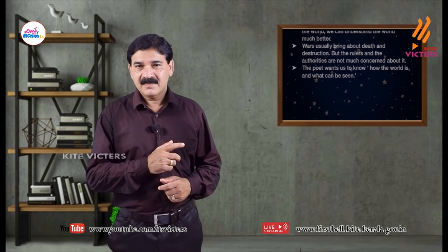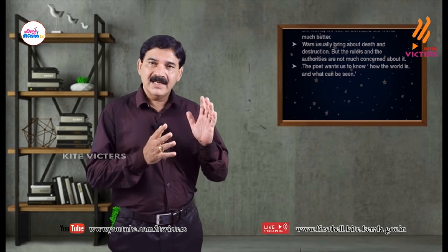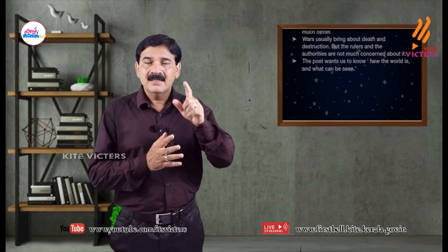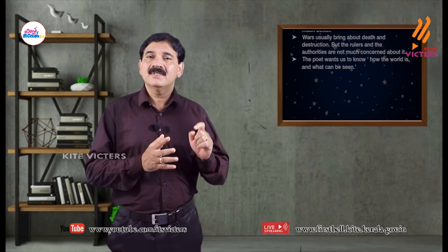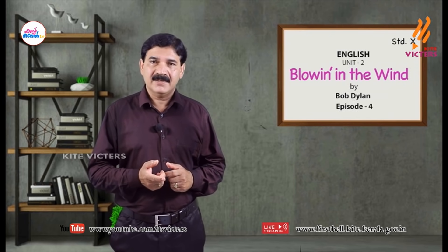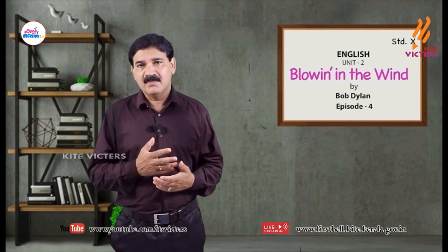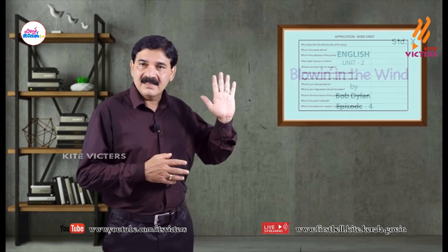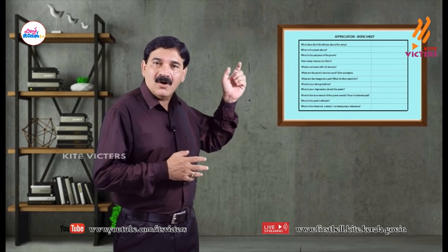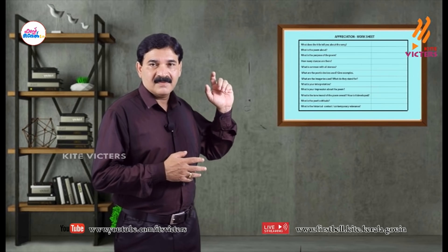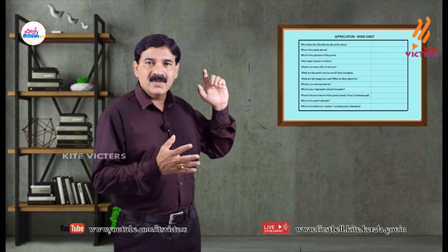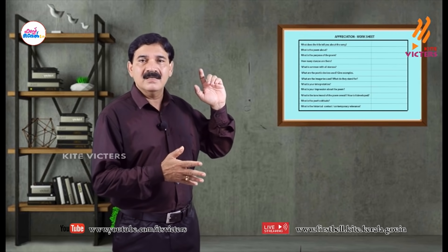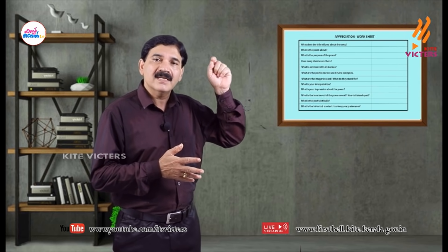Wars usually bring about death and destruction, but the rulers and authorities are not much concerned about it. The poet wants to say how the world is and what can be seen. Dear children, arrange these sentences in the right order and prepare an appreciation of the poem. What are the points you should remember when you attempt an appreciation? Write answers to all these questions, and when you answer them you will be able to write an appreciation based on these answers and the points we discussed.